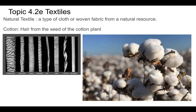Cotton is the hair of a seed — this is the cotton plant. The fiber is a twisted fiber, which makes great thread. It's breathable and has all kinds of great properties. It comes from the seed hairs.